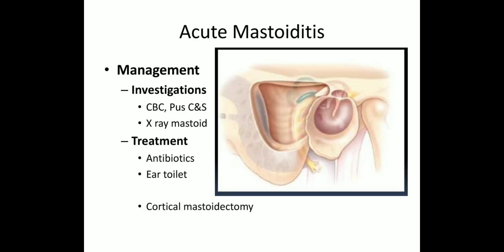Management includes investigations and treatment. Investigations include complete blood count, pus from the middle ear sent for culture and sensitivity for proper antibiotic selection, and X-ray mastoid in 15-degree cephalocaudal loss view, which may show clouding of air cells. Treatment starts with antibiotics — ampicillin with metronidazole for anaerobic coverage. Proper ear toilet should be done, that is suction clearance of the ear, keeping the perforation patent by removing secretions from the external auditory canal.